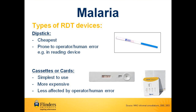There are three types of RDT devices. The cheapest is the dipstick, which works by placing the nitrocellulose strip into a well containing the blood. If the malaria parasite is present in the blood, conjugated antigen will attach to the immobilised antibody in the strip and a colour change will occur. Dipsticks are often more prone to operator error because they rely on the operator being able to read the colour change in the correct area, which can sometimes be difficult to see as there are no markings to indicate the reading window. The line can also sometimes be quite faint, but still indicate a malaria infection.